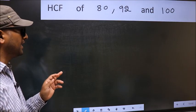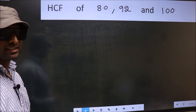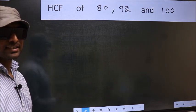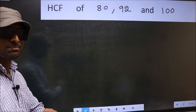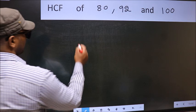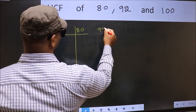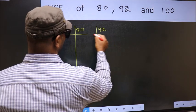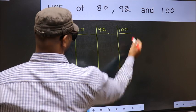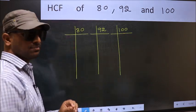HCF of 80, 92 and 100. To find the HCF, for that we should do the prime factorization of each number separately. What I mean is 80, 92, 100. This is your step 1.